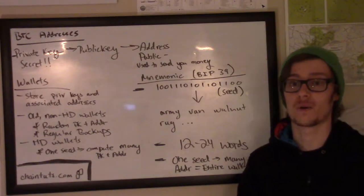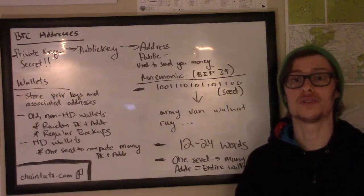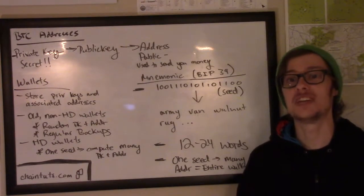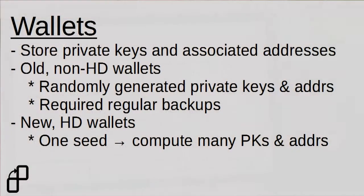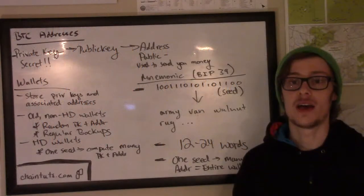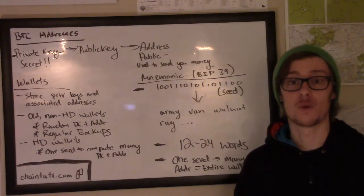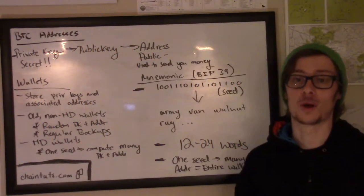So the developers in the Bitcoin space came up with a really cool technology called Hierarchical Deterministic, or HD wallets. These wallets use one seed — one number — and a special algorithm to generate many many private keys and addresses from that one seed. So all you would have to do is back up this one seed, and the same algorithm would be able to regenerate all of your private keys, all of your addresses, and therefore all of your funds stored in a wallet.